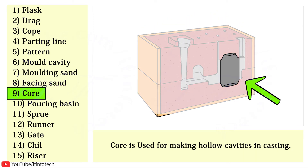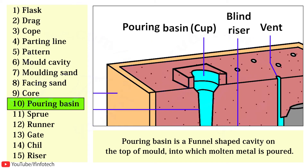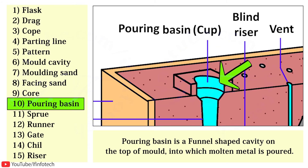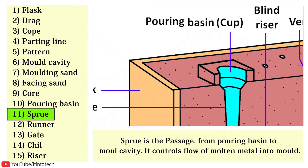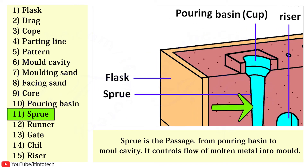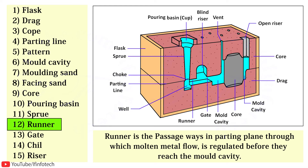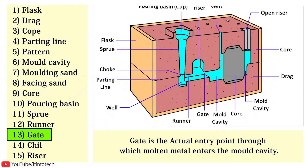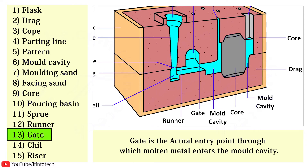The core is used for making hollow cavities in casting. The pouring basin is a funnel-shaped cavity on the top of the mould into which molten metal is poured. The sprue is the passage from the pouring basin to the mould cavity and controls the flow of molten metal. The runner is the passageway through which molten metal flow is regulated before reaching the mould cavity. The gate is the actual entry point through which molten metal enters the mould cavity.